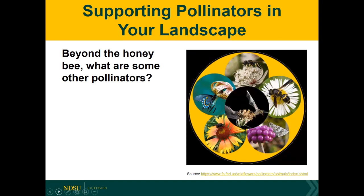Beyond the honeybee, what are some other pollinators you can think of? We're seeing butterflies, hummingbirds, bats, flies, moths, and mason bees come in. I'm especially excited to hear someone mentioned a mason bee, because mason bees are one of North Dakota's native pollinator bees. They're generally somewhat solitary. We won't be covering all the different species of native pollinators but will give an overview.